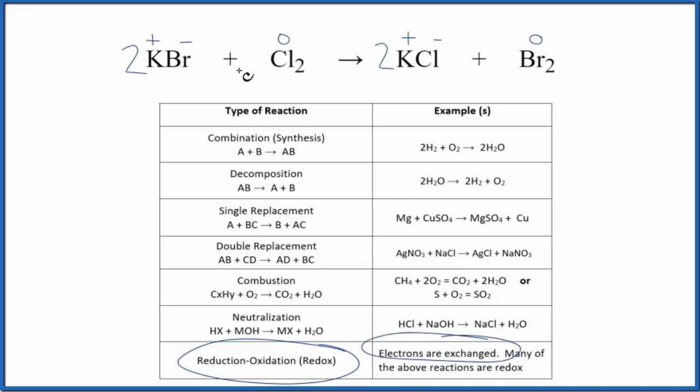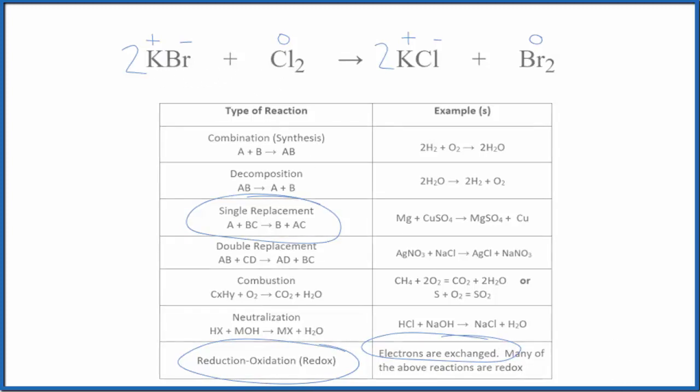So for KBr plus Cl2, the type of reaction, we would say it's single replacement because the chlorine replaces the bromine. We could also say it's a redox reaction because electrons are exchanged in the reaction. This is Dr. B with the type of reaction for KBr plus Cl2. Thanks for watching.